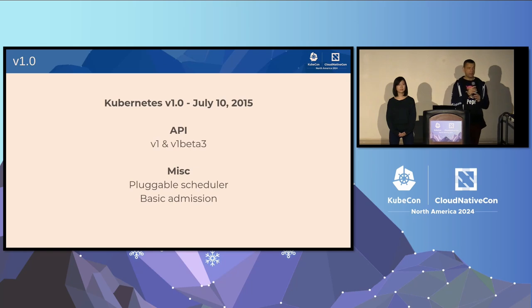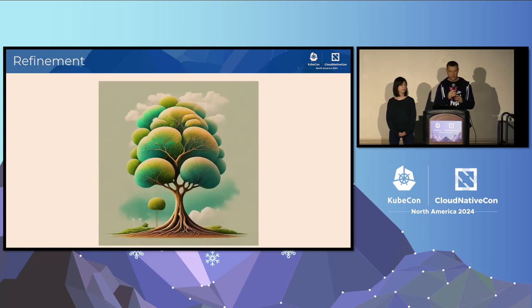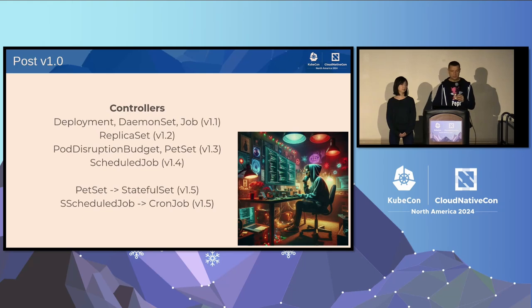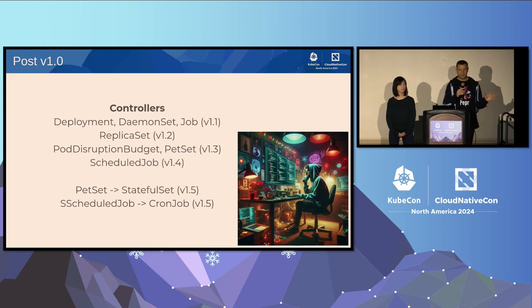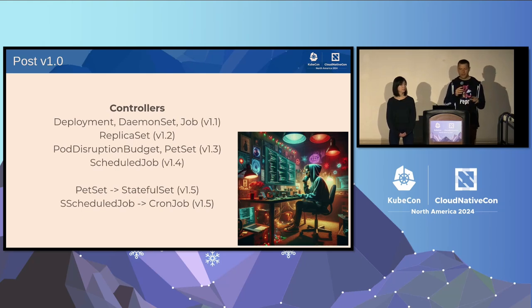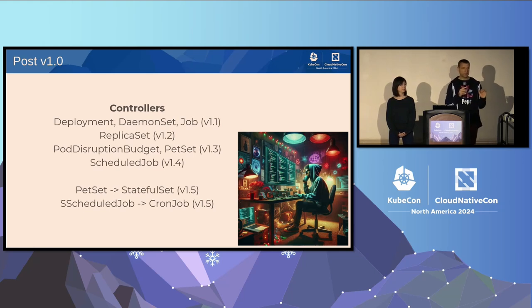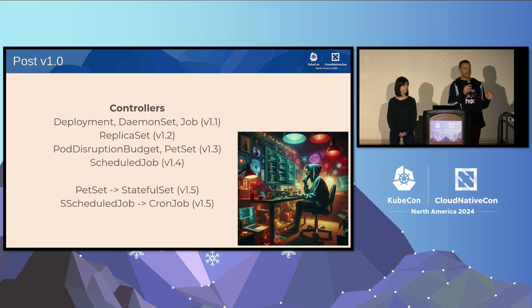After 1.0, which had probably the biggest and fastest changes, we slowly built additional controllers over the next releases. Janet was primarily interested in the workload side — deployment. StatefulSet is where Ken came into the picture. I was working on jobs and cron jobs. Interestingly, the first version of cron job was called 'scheduled job,' but because it might be confusing — people might think it had something to do with the scheduler — we decided to align with Linux and renamed it to cron job.